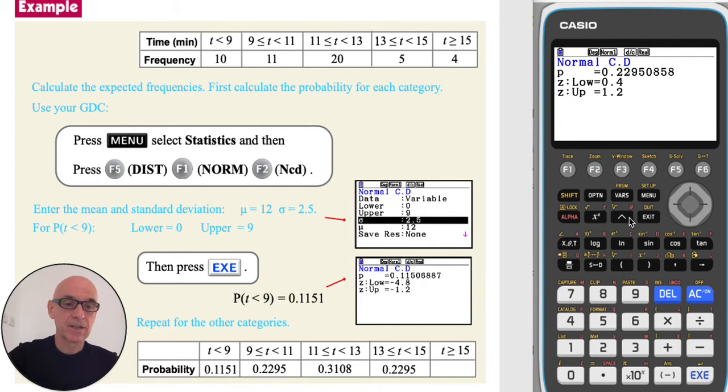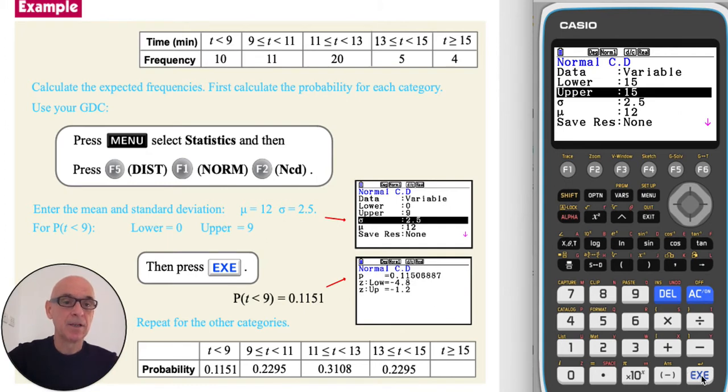And for the final category, setting the lower limit to equal 15 minutes and the upper limit to equal a high number, so we can put 1 times 10 to the power of 99.